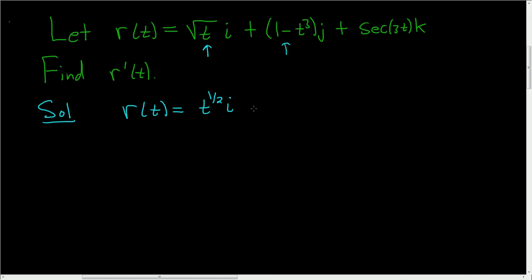This piece looks OK, so this is plus 1 minus t cubed j. And this piece also looks OK, so this is the secant of 3t k.